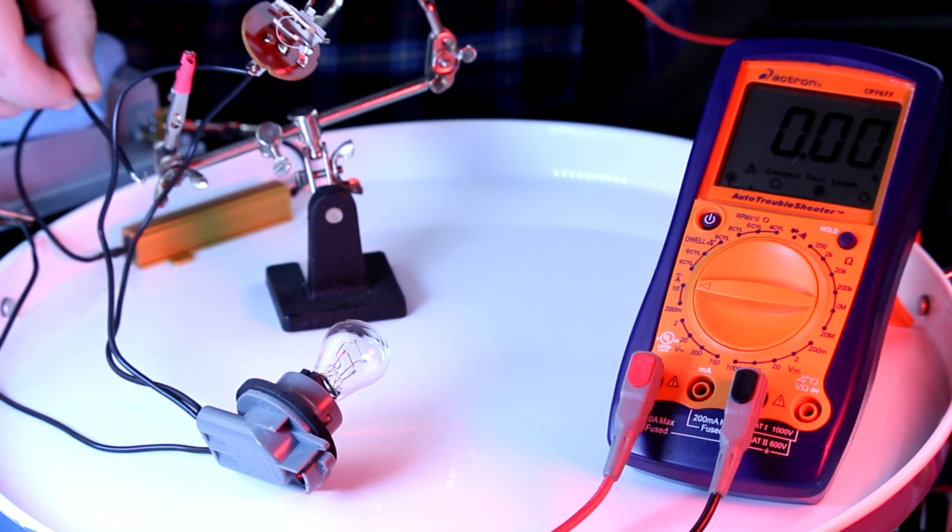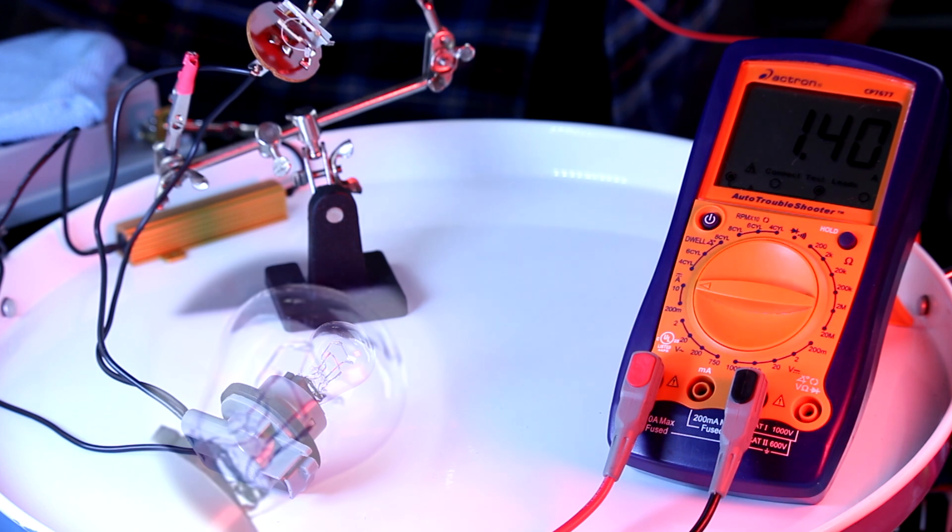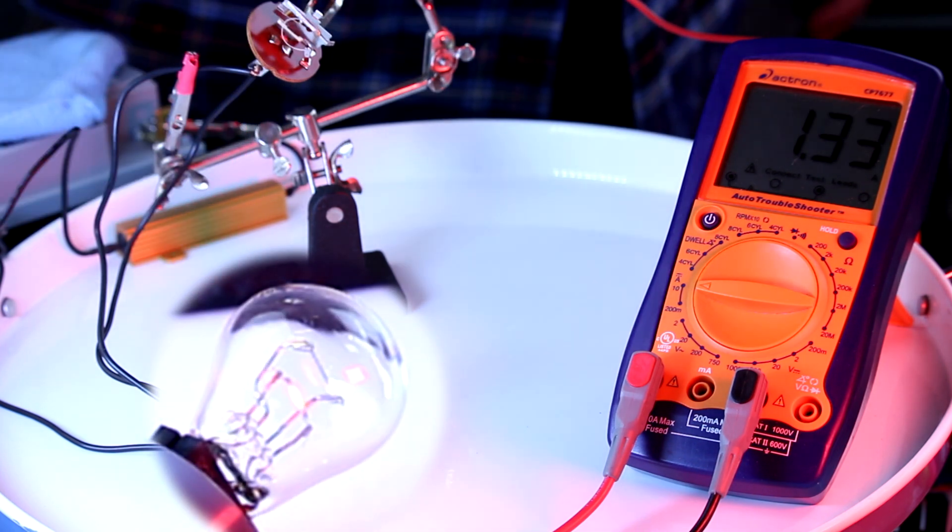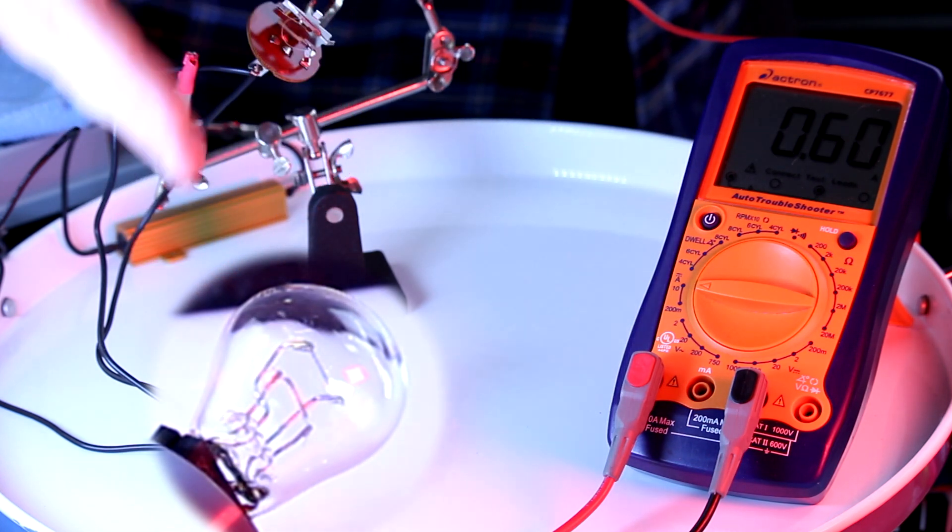Now instead of having this resistor in parallel, let's put it in series and see what happens. This flasher is still working to turn the bulb on and off, but because there's a resistor in series with the bulb, the resistor isn't allowing much amperage to get to the filaments, and they don't glow very much.